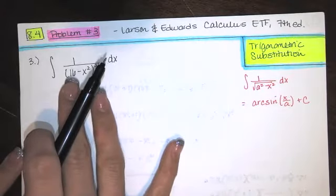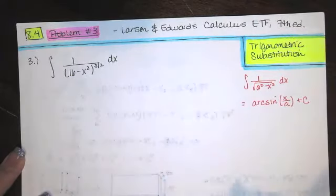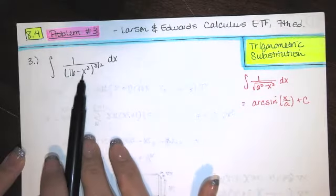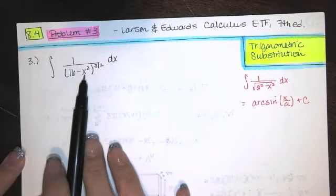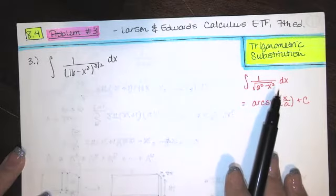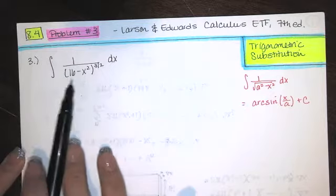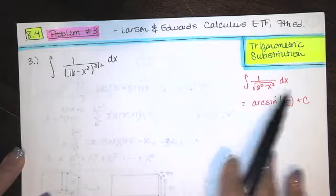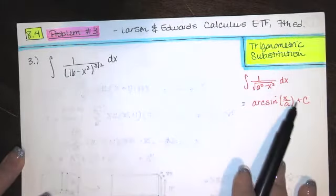If we're looking at an integral and the integrand reminds us of one of our inverse trig antiderivatives — for example, this one reminds me of the arc sine antiderivative because it has that a squared minus x squared in the parentheses — it looks like a squared minus x squared under a square root, but that's not exactly what I have. I have that expression to the three halves power rather than the one half power.